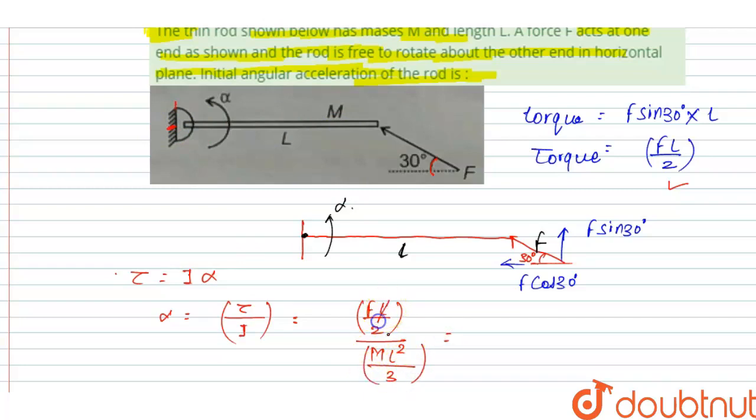And when we solve then we get L and L cancel. And this is equal to 3F upon 2ML. This is the value of angular acceleration, 3F upon 2ML. And this is the right answer of this question. Thank you.